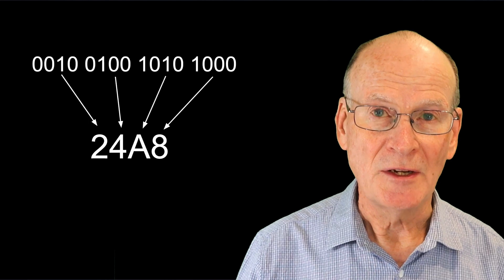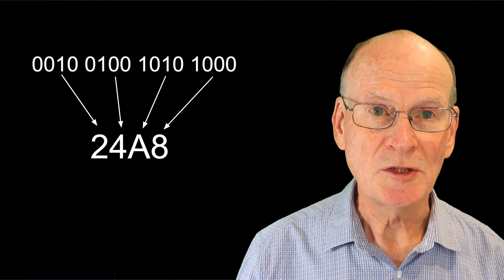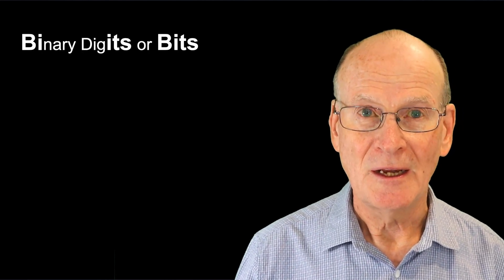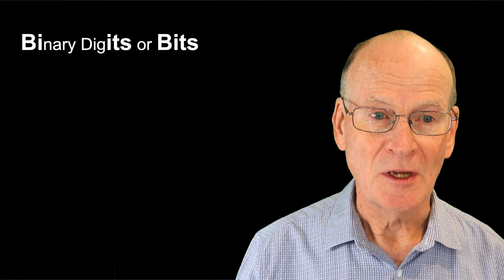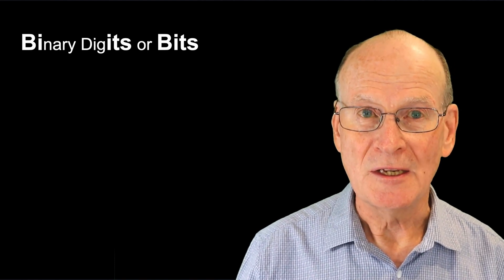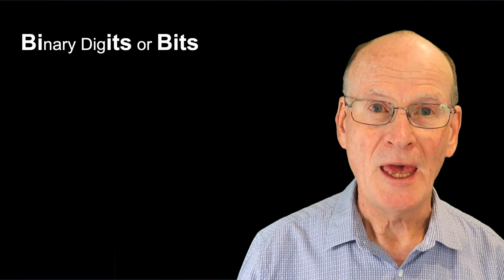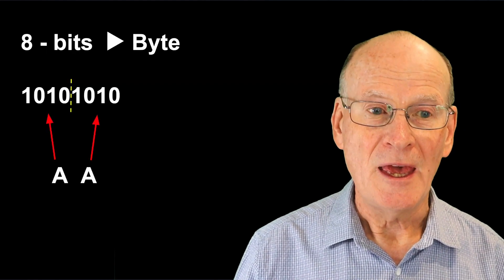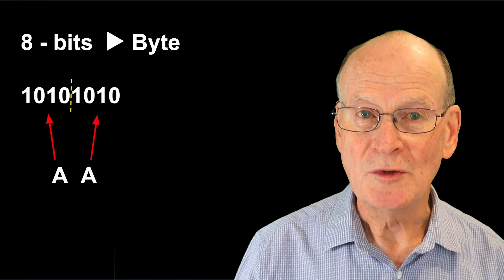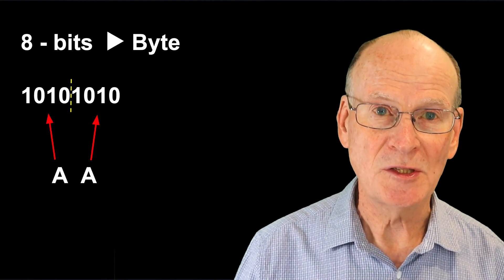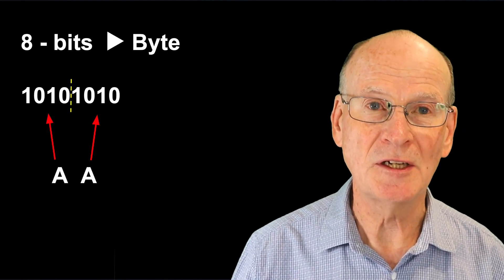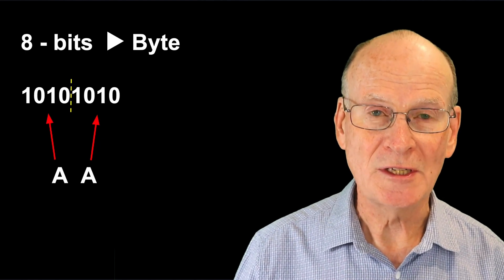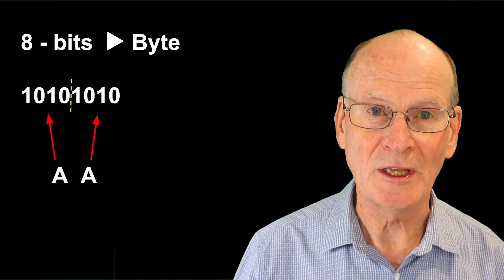Binary digits inside a computer are usually arranged in groups of 8, we call bytes. So binary digits is shortened to bits, and the 8-bit grouping is called a byte. And since bytes consist of 2 groups of 4 bits, it's very easy to write the value as 2 hex digits. We just break it into the 2 groups of 4 and then translate each group of 4 into a single hex digit.